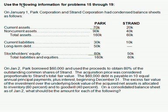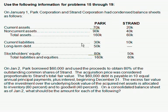To answer these, they give you the balance sheet right here. It's a condensed balance sheet. Here's the balance for the Park Company, and then there's the balance for the Strand subsidiary, or subsidiary-to-be.